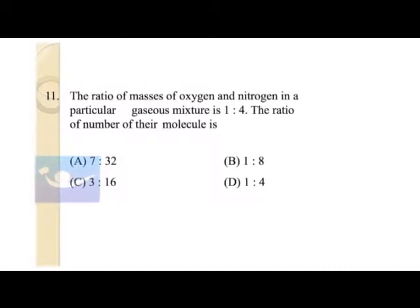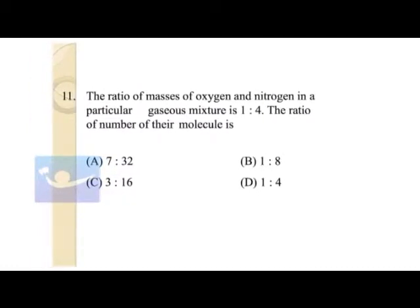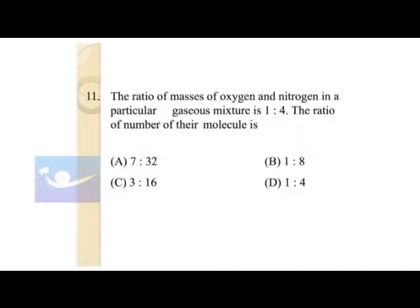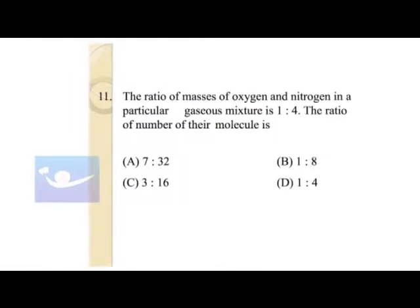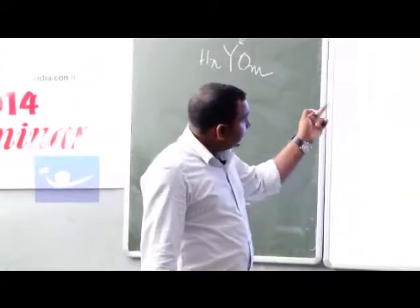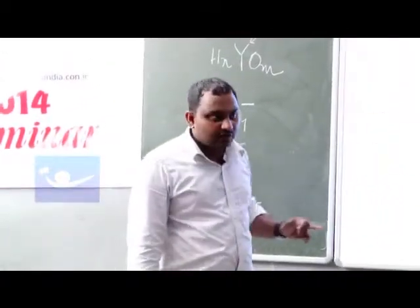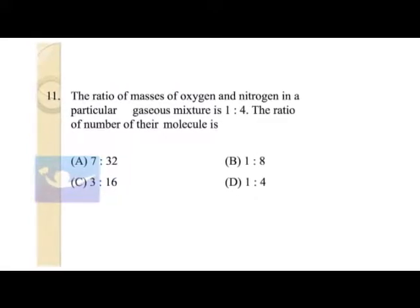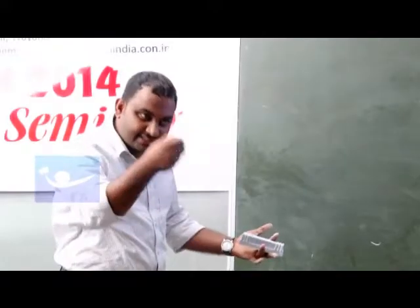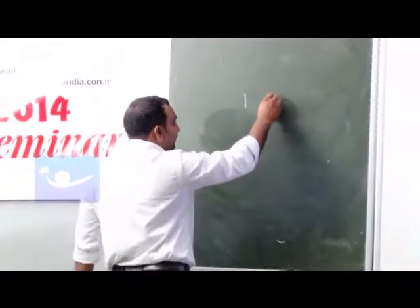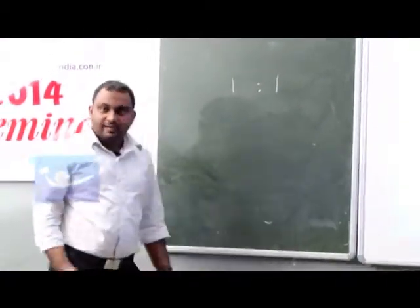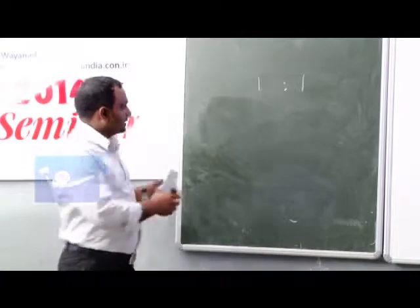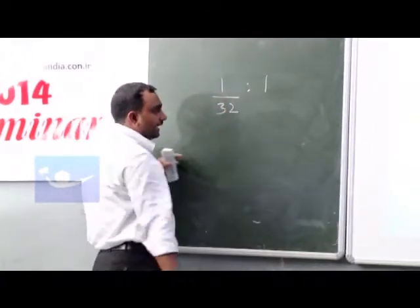Stoichiometry. The ratio of masses of oxygen and nitrogen in a particular gaseous mixture is 1:4. What is the ratio of number of their molecules? So indirectly they are asking, if you have taken oxygen and nitrogen in the ratio of 1:4, what is the ratio of their number of moles? You have to take 1 gram of oxygen - any amount you can take, let it be simple. So we take 1 gram of oxygen and 4 grams of nitrogen. When I say 1 gram of oxygen to convert it into number of moles, I have to divide it by molar mass. What is the molar mass? 32.